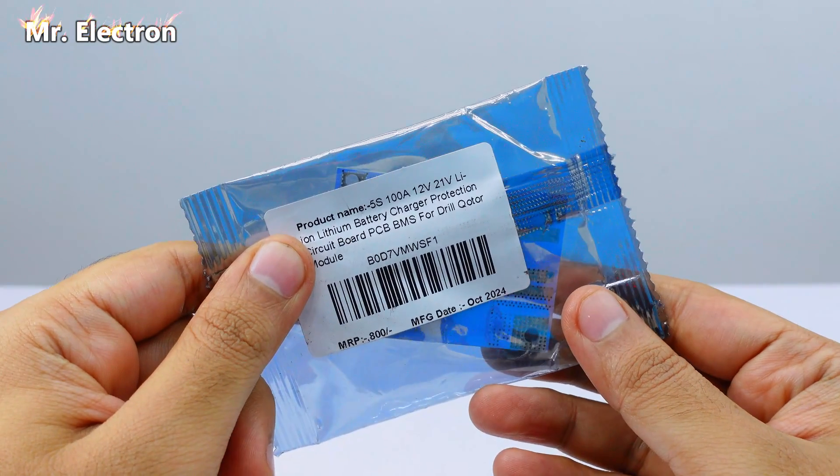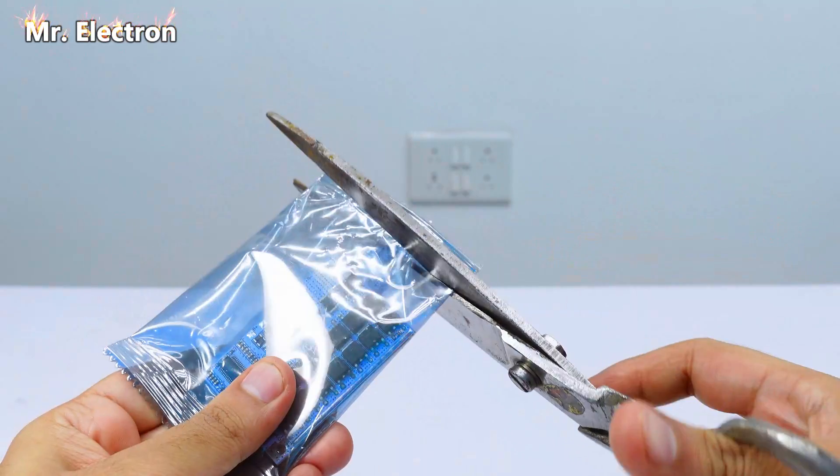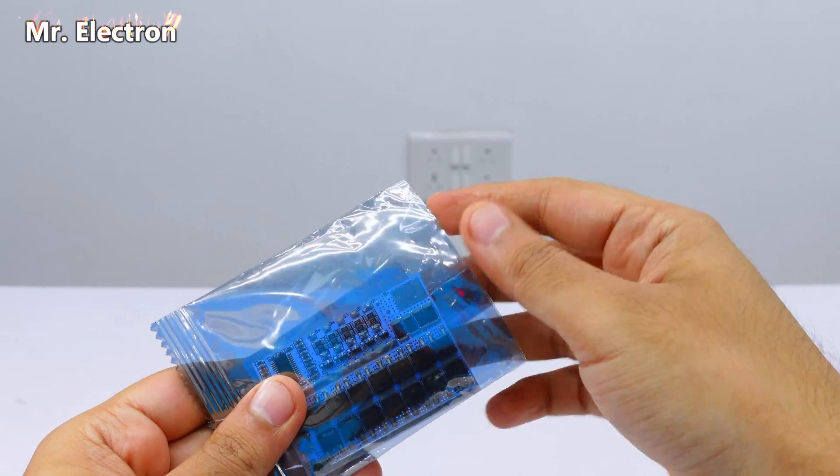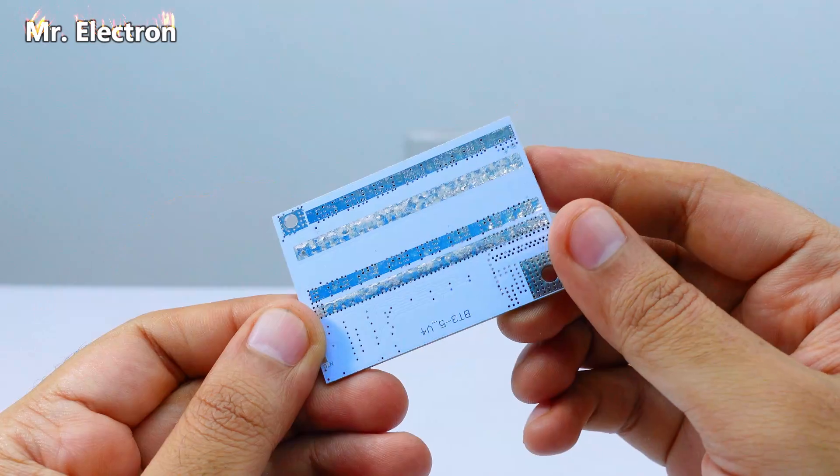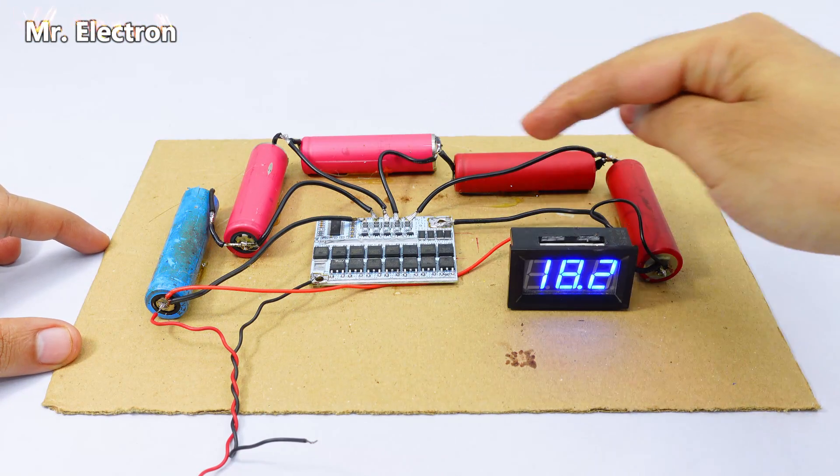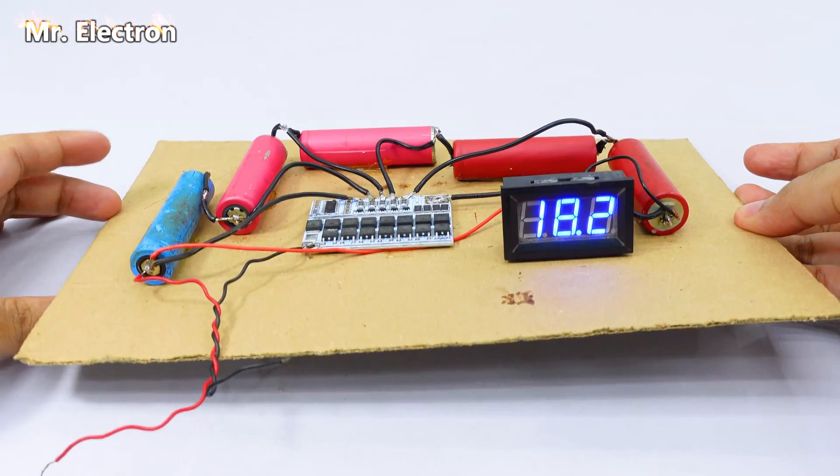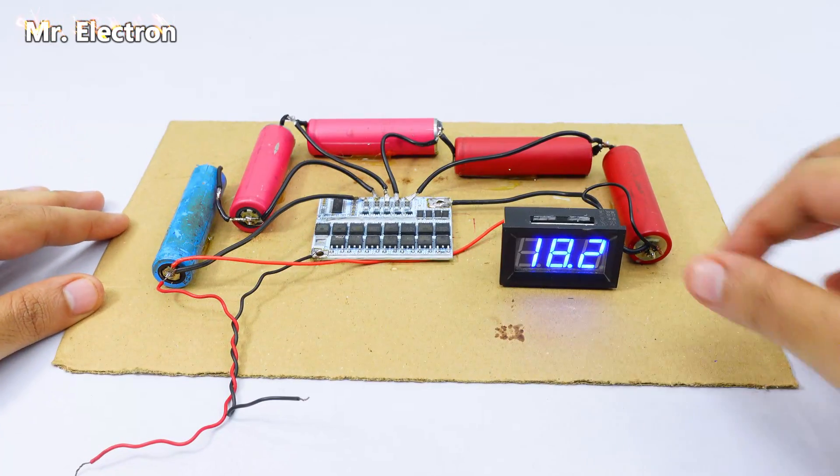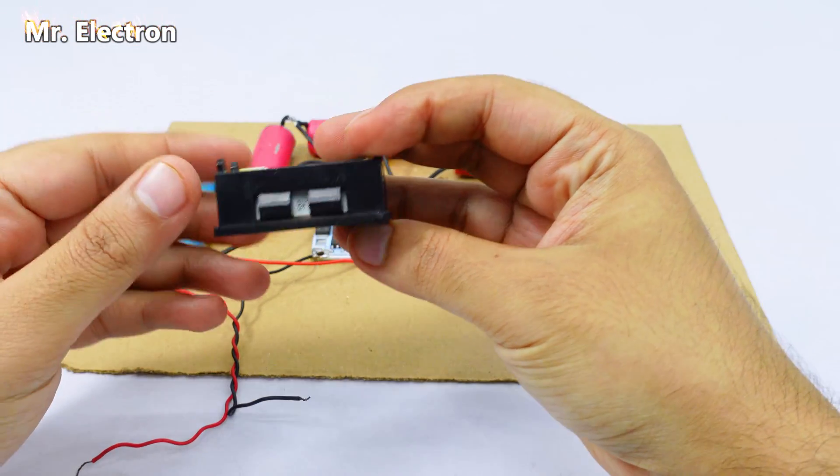Next is this 5S 100 amperes 21 volts BMS. Let's test it. So here as you can see that I've done all the electrical connections and I've included every single cell this time. And here you can see the maximum voltage is 18.2 volts including this cell as well.